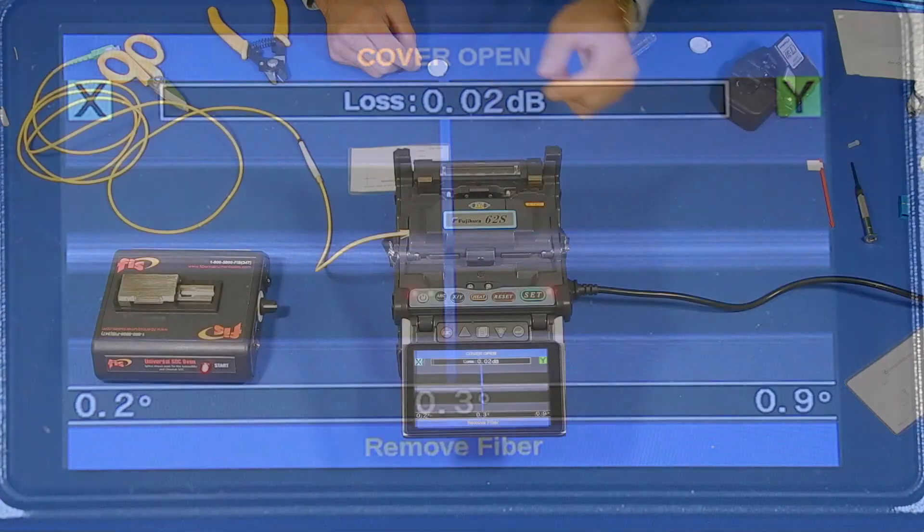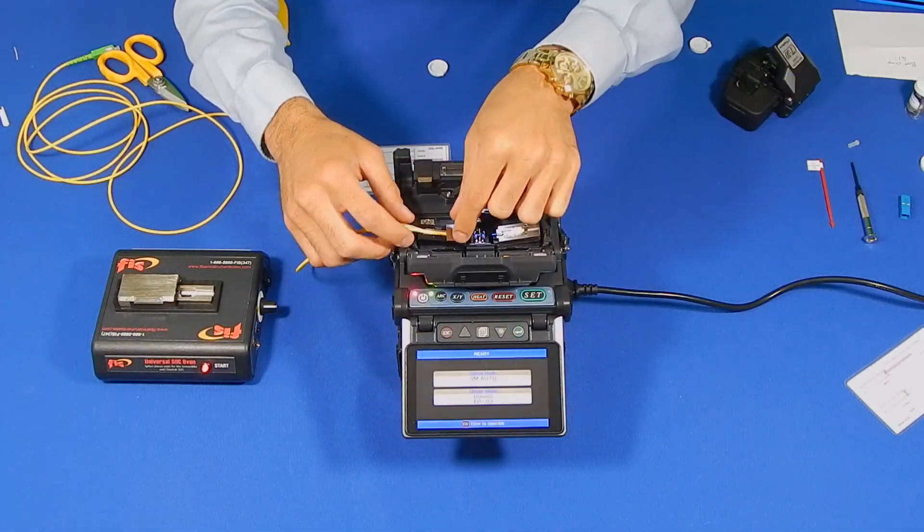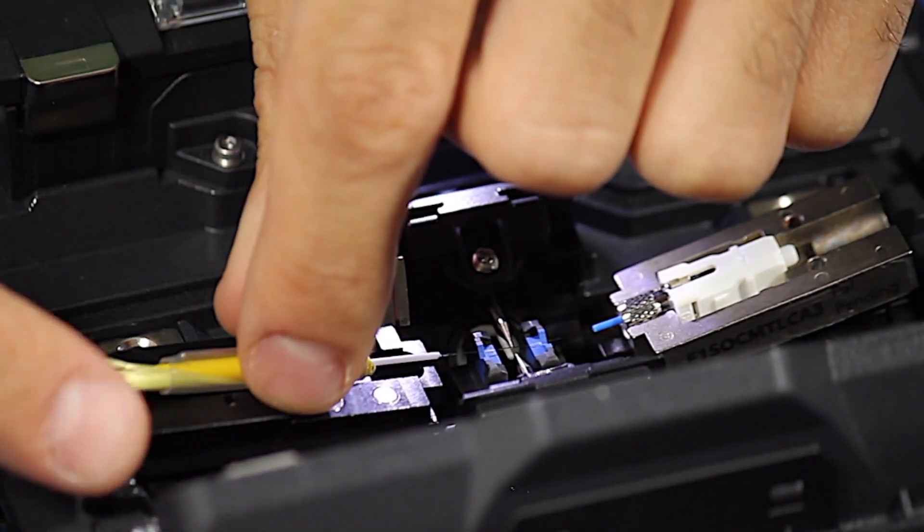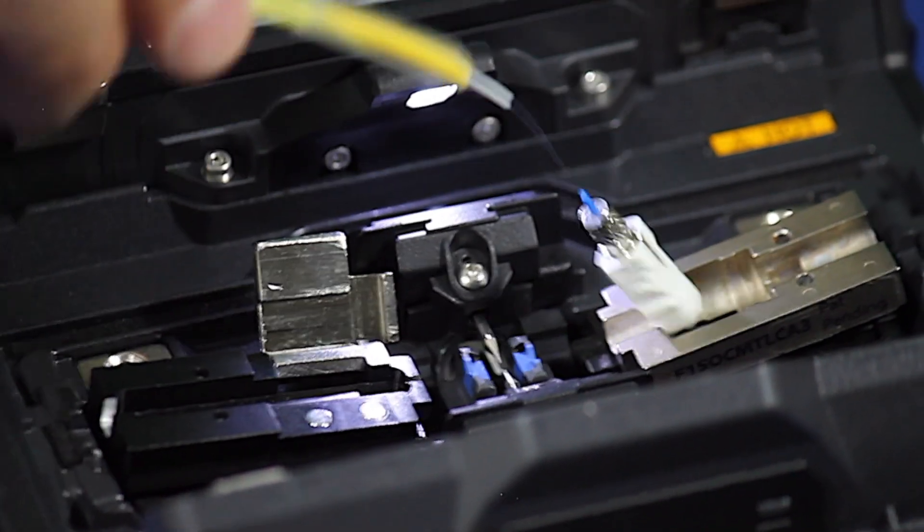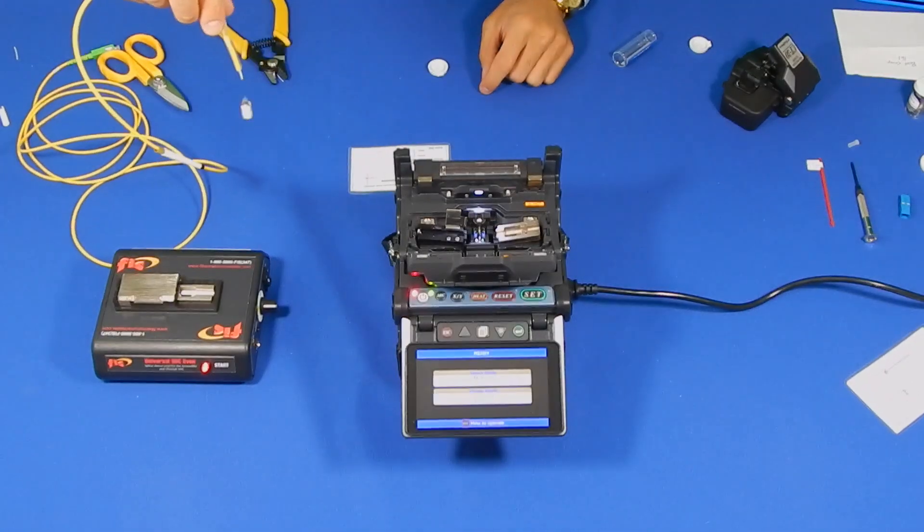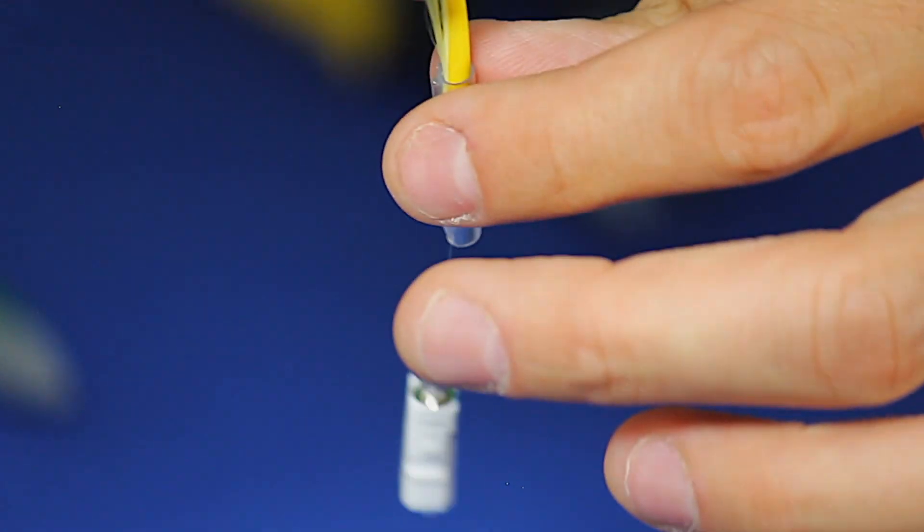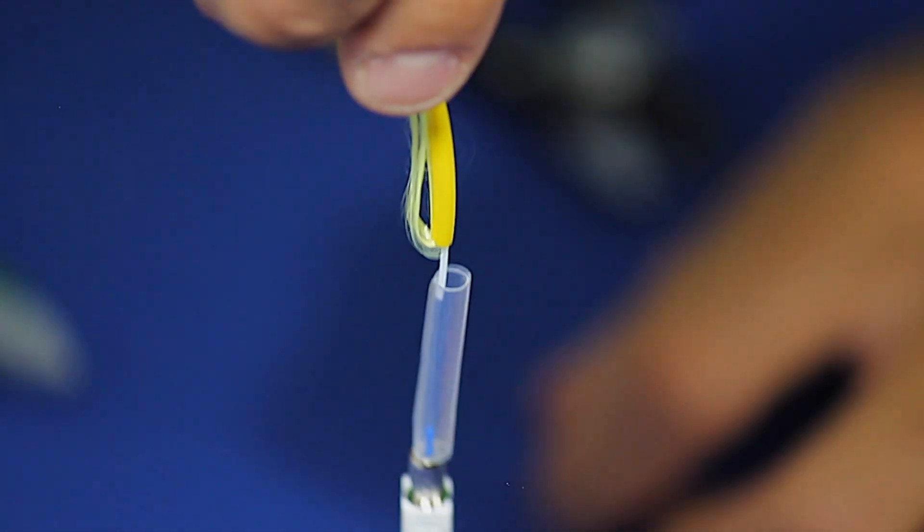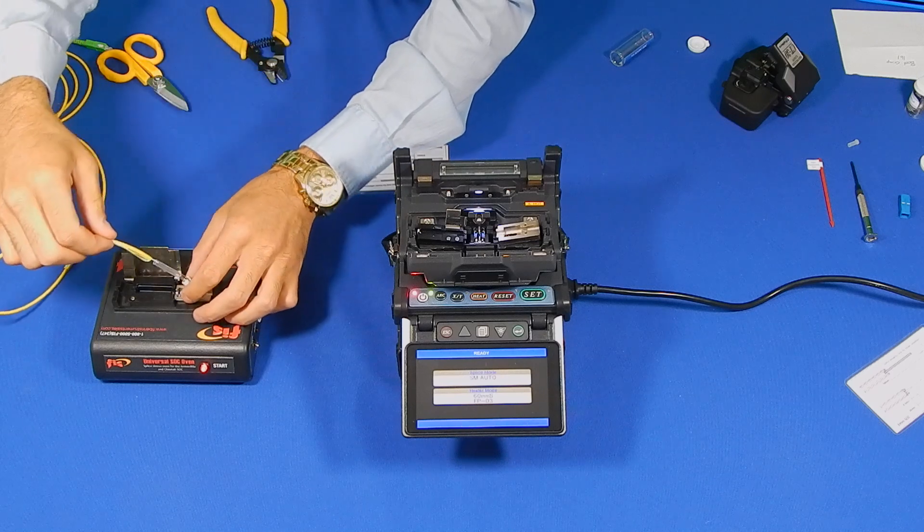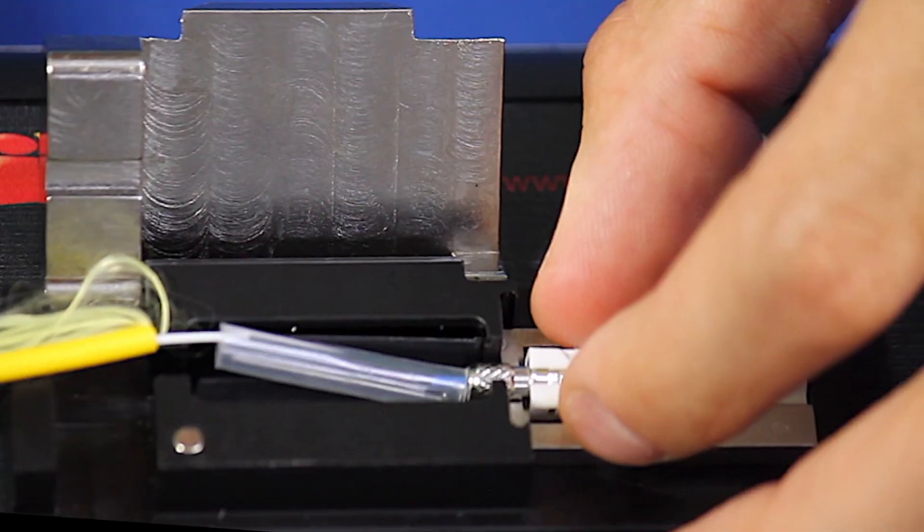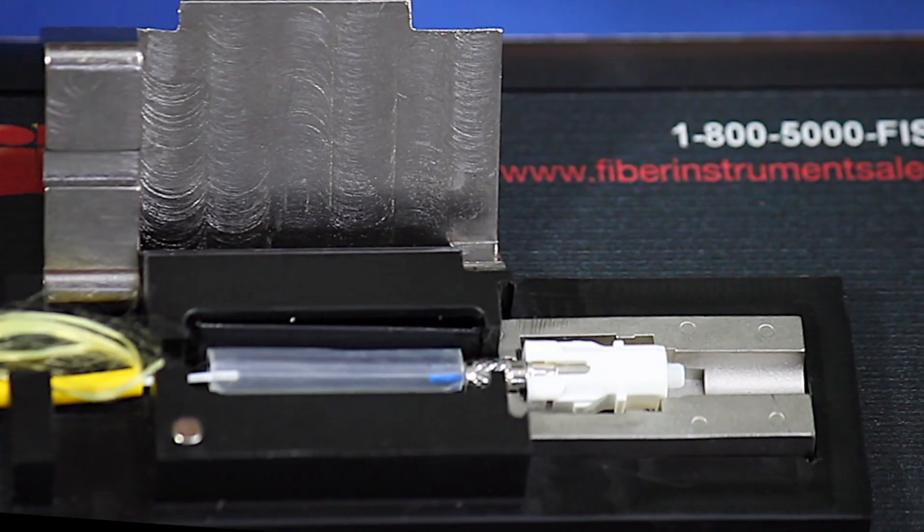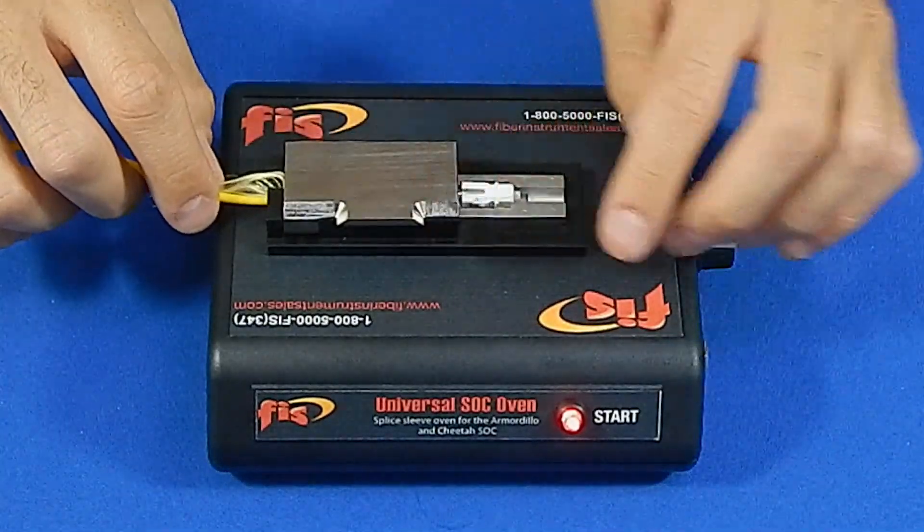Close the lid and begin the fusion splice process. After achieving a successful splice, open the clamp of the cordage holder and carefully remove the back end of the cable from the cordage holder and pull up and away from the SoC connector. This will prevent the fiber from breaking. Do not hold onto the connector. Slide the splice sleeve down while holding onto the Kevlar. Place the connector into the holder of the oven and adjust the sleeve up against the connector post. Close the lid and press the start button.